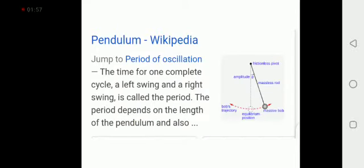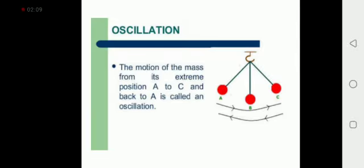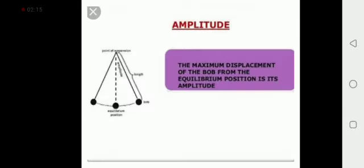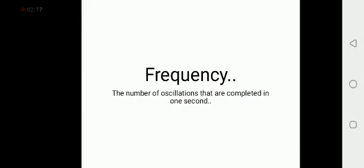Next is time period. The time for one complete cycle, a left swing and a right swing, is called period. When the pendulum completes one oscillation from A to C and C to A, that is its time period.